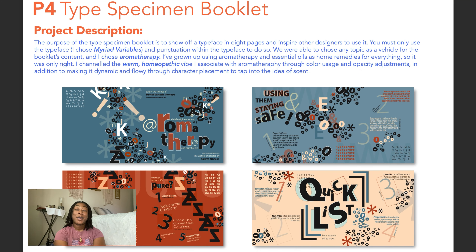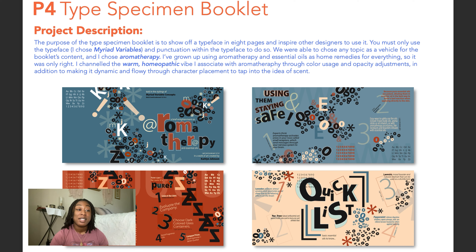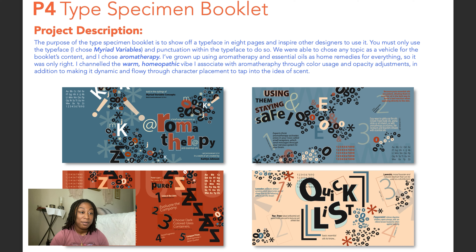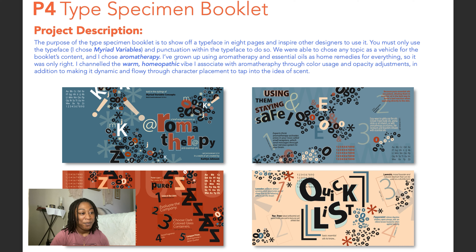This is my favorite project from the class because we got to really do extra stuff with type. We had to make a type specimen booklet — we could pick any topic, we just had to use the same font to advertise it and make somebody want to use it. I chose the Myriad variations, and my topic was aromatherapy because I love essential oils and homeopathic medicine. I did a quick rundown of some basic essential oils and their benefits, and made little shapes out of the O's, asterisks, and punctuation marks to show off what the font could do.